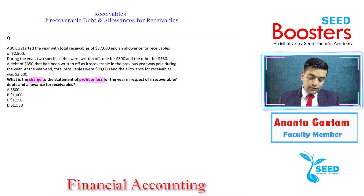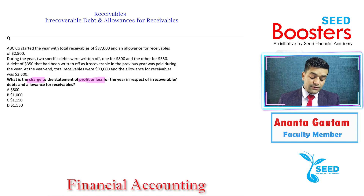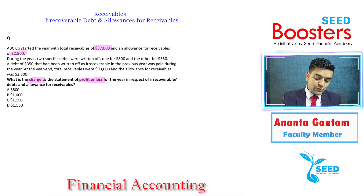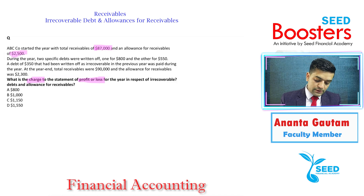So we know the requirement. Let's look into the scenario. So ABC company started the year with total receivables of 87,000. So total receivables are 87,000, and allowance for receivables is 2,500. So this is the brought-forward allowance for receivables.